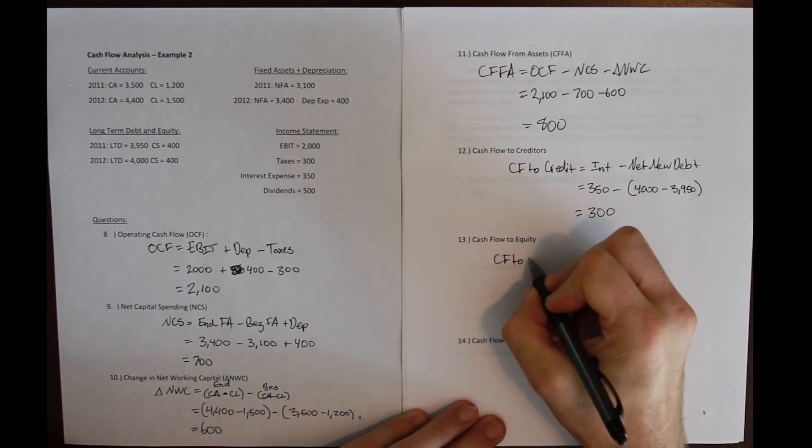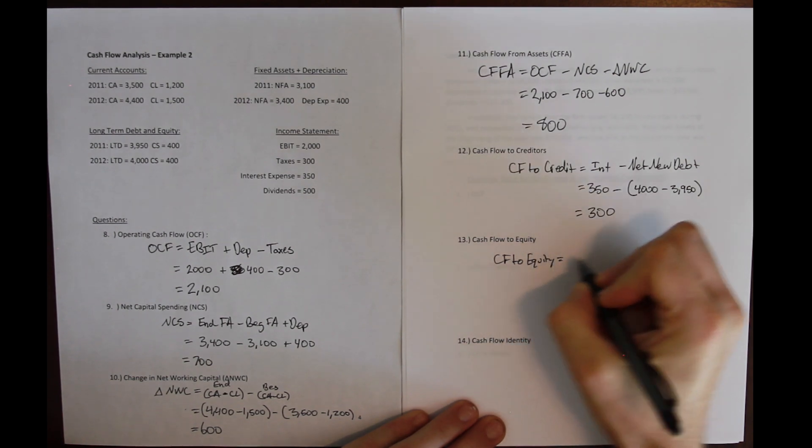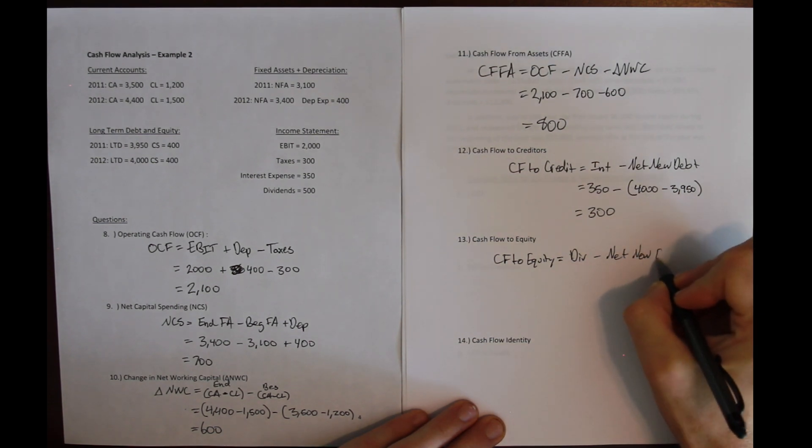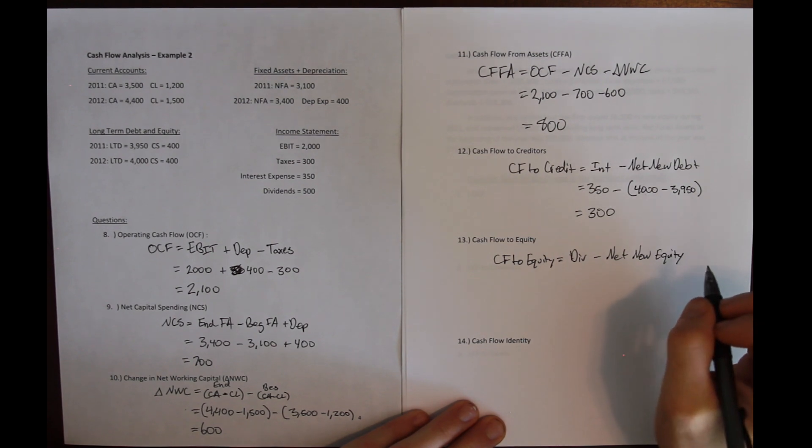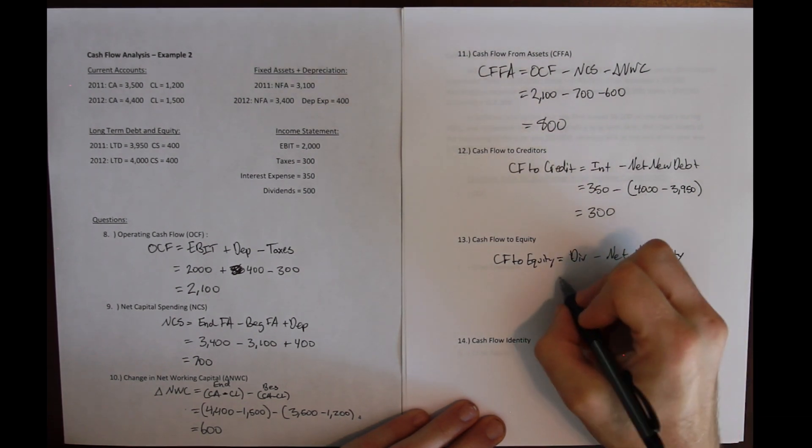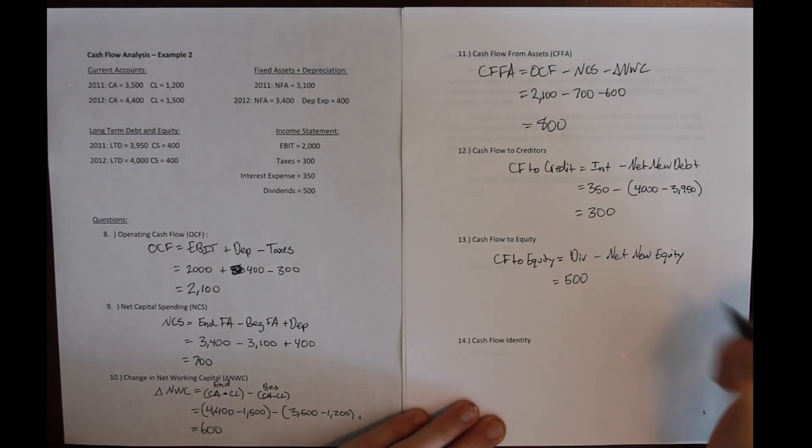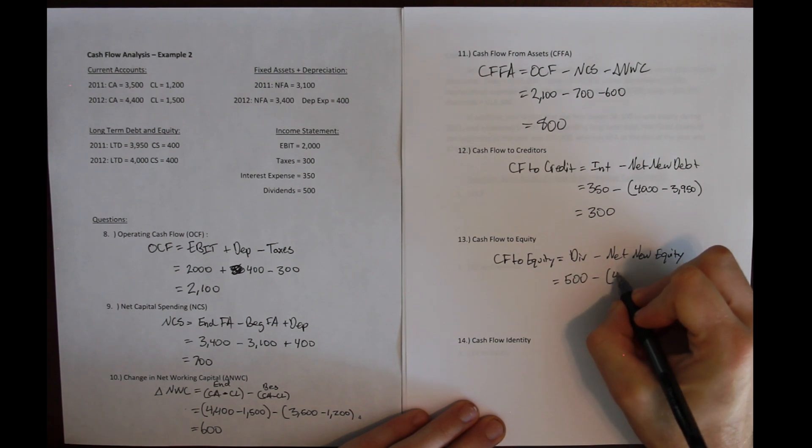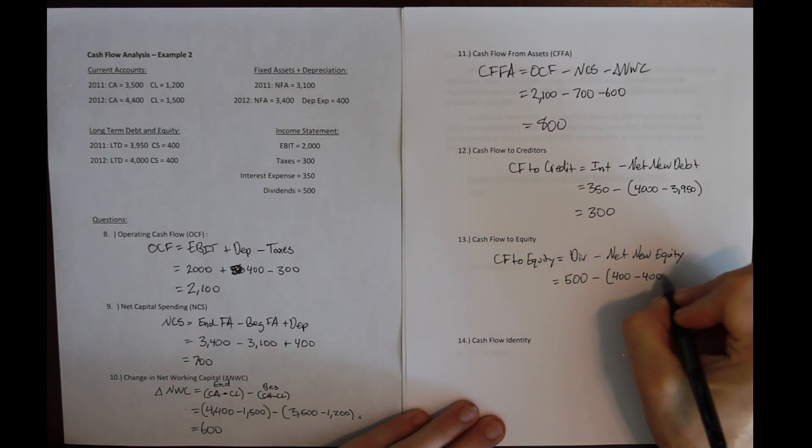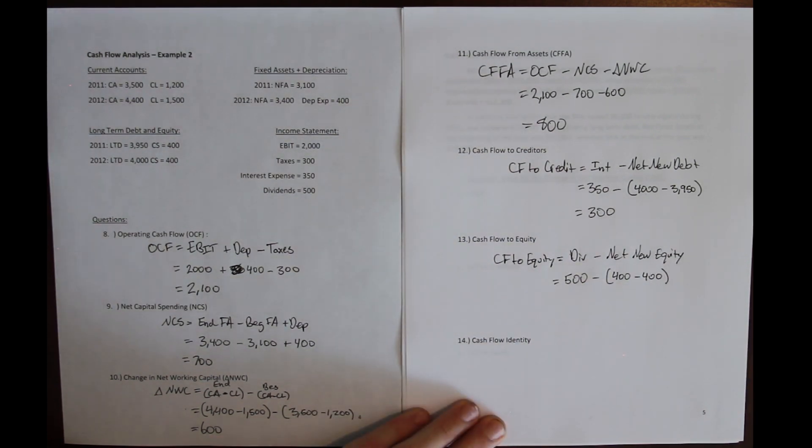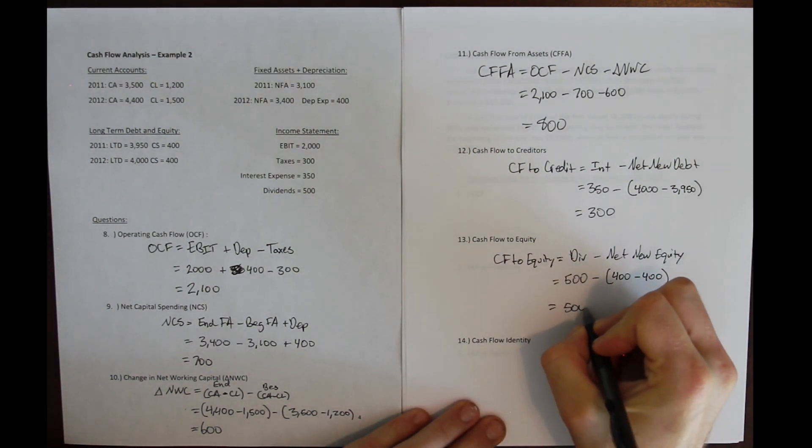And we can see that by solving for what we call cash flow to equity. Cash flow to equity is similar: it's dividends paid minus net new equity. We want to look at the change in our equity account, which is common shares. We pay out dividends, we see that on our income statement we pay out 500 worth of dividends to our existing shareholders. And then we see that our common share account does not change from year to year, so we don't raise new shares or pay off our old shares. We simply just pay out a big share of profit to our existing shareholders, and we pay out 500.